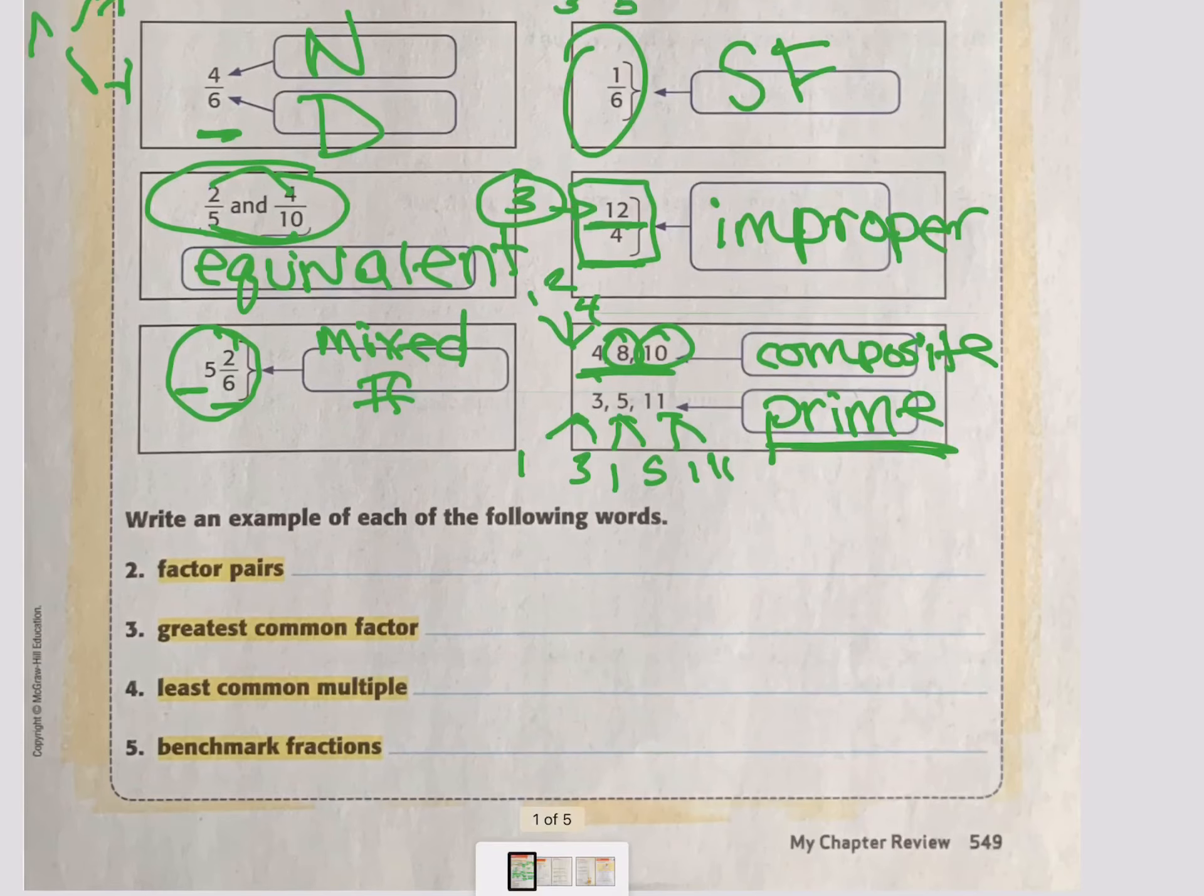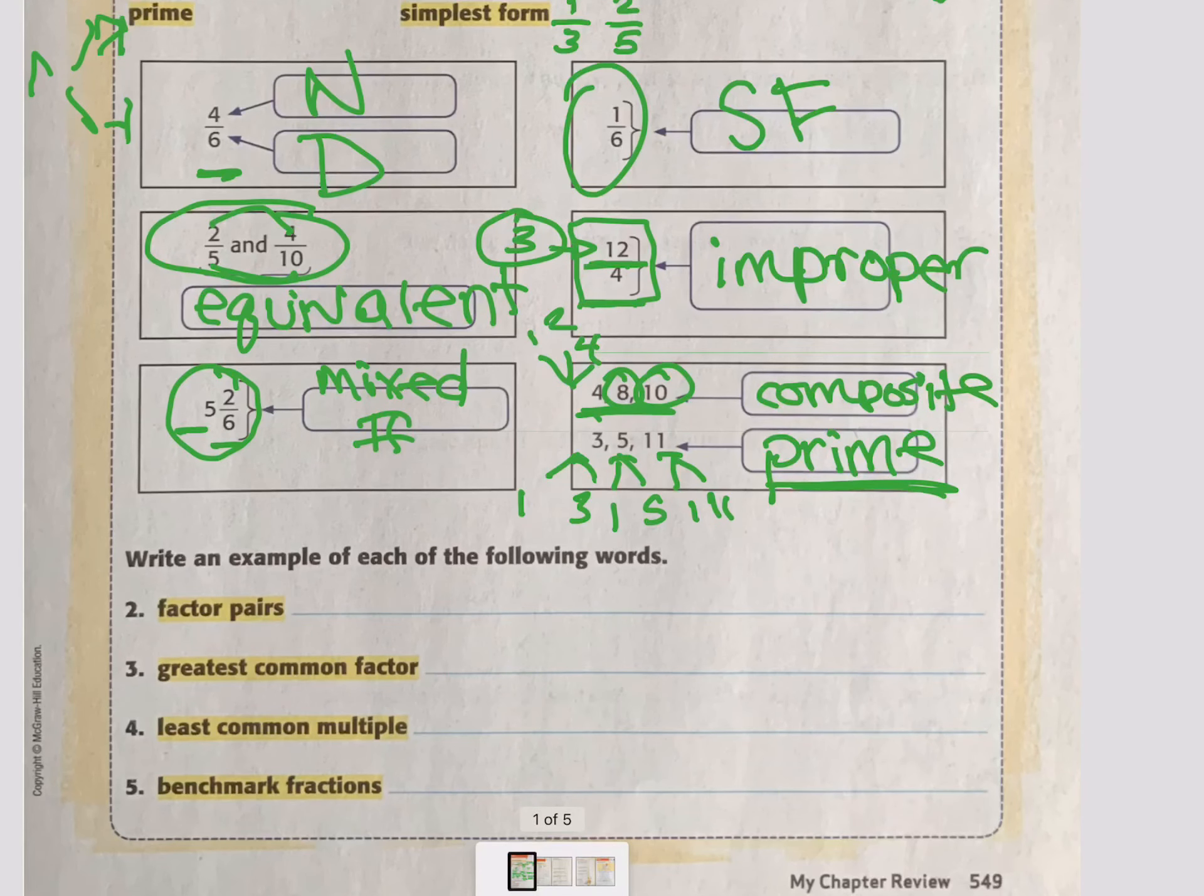All right. Now they want examples of each of the following. What's a factor pair? A factor pair is two factors that equal one product, right? So you can give me any two numbers and what they equal. So I'm going to go with 4 and 6 are factor pairs for 24. So you have to show me the pairs and what they equal.